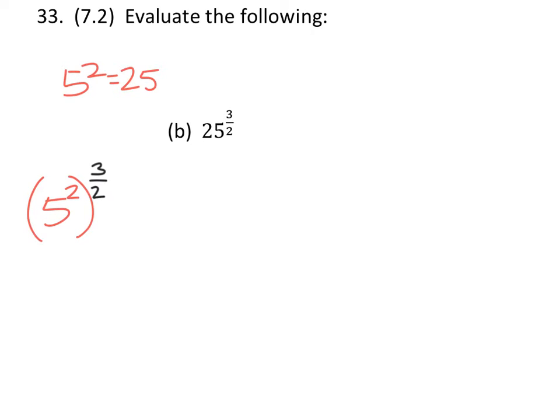We have the power of a product rule where we're just going to multiply the exponents. So that gives us 5 to the power of 2 times 3 halves. Some of you may prefer to see these in parentheses; it's not going to matter.